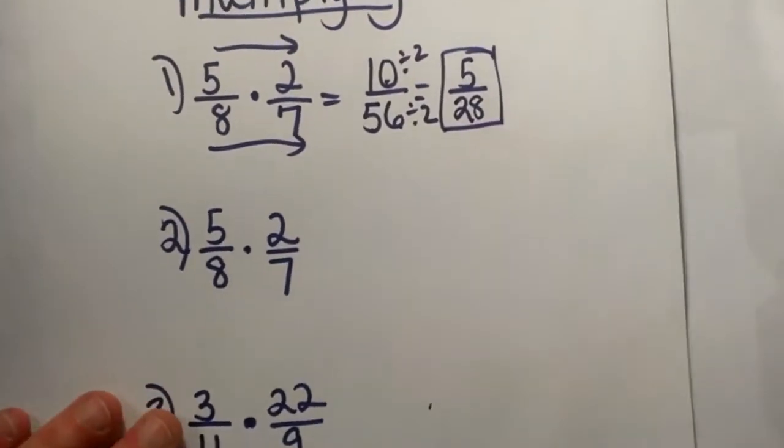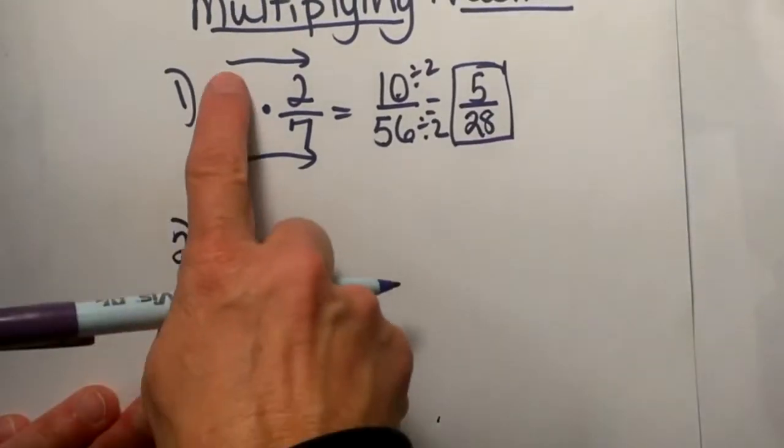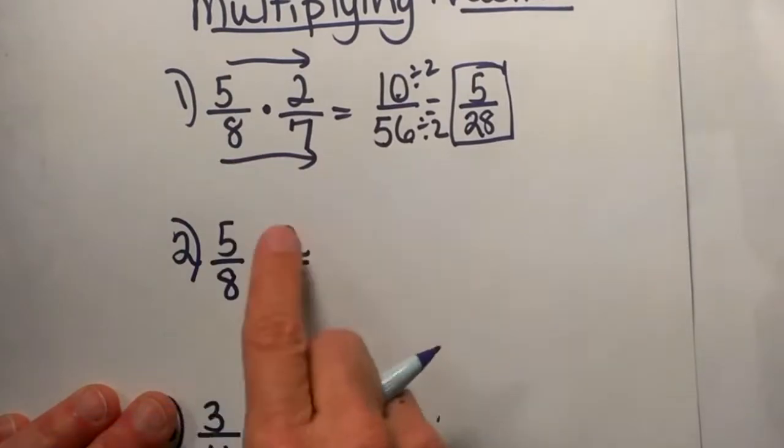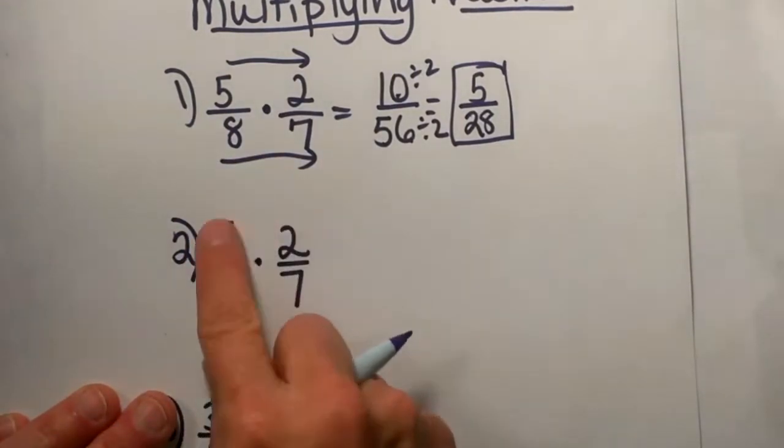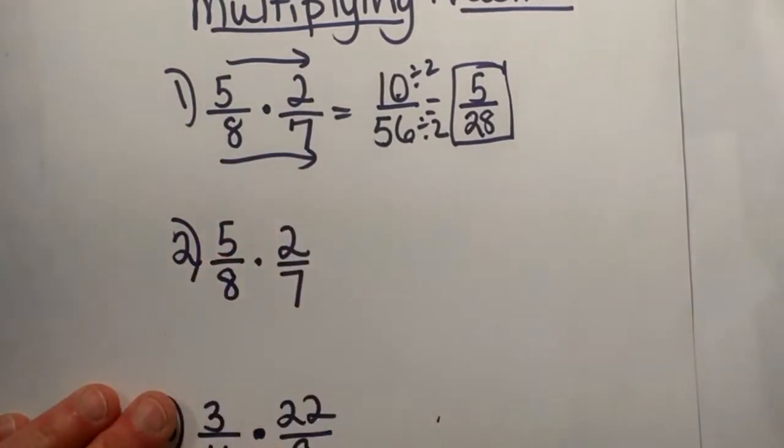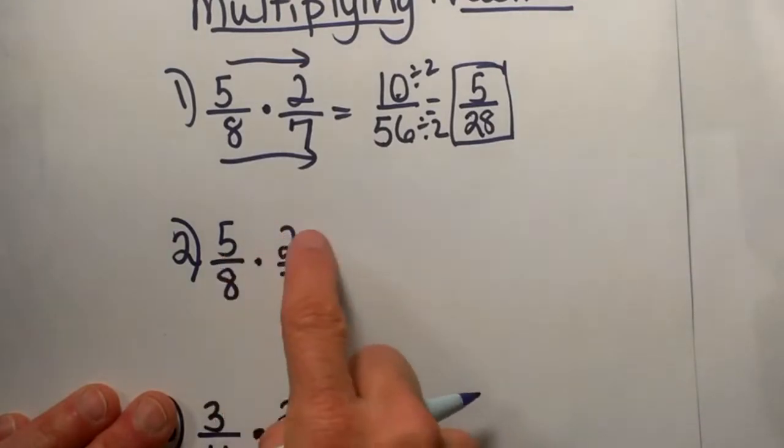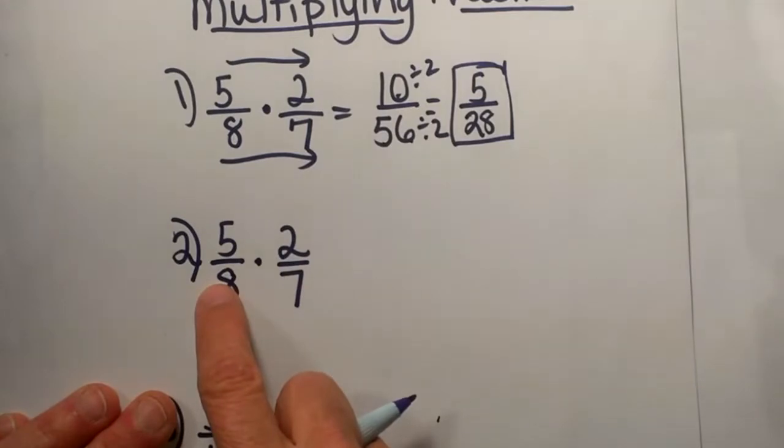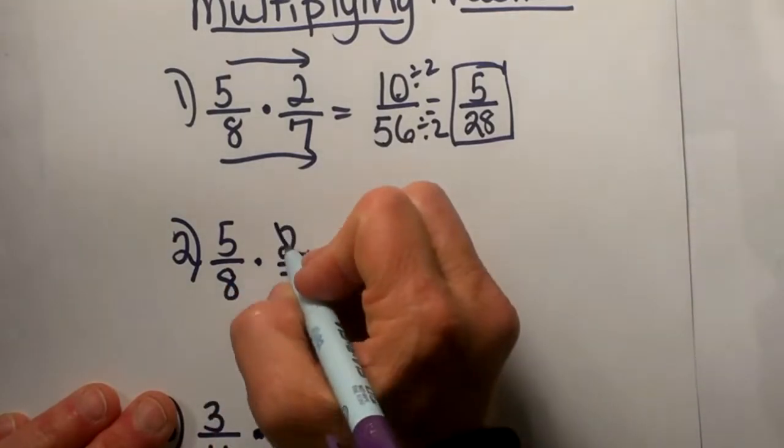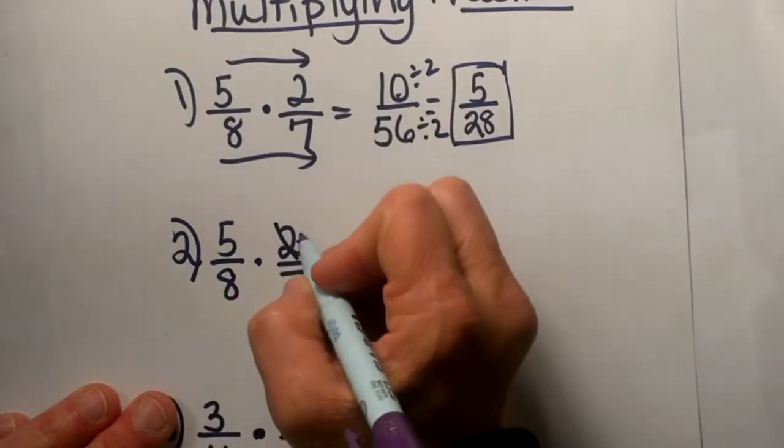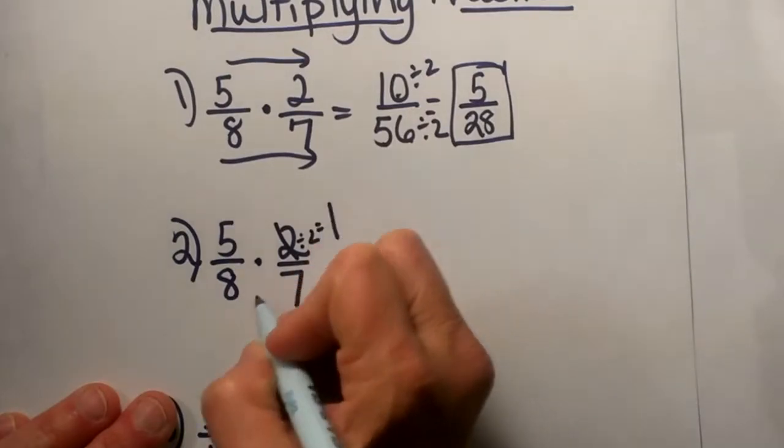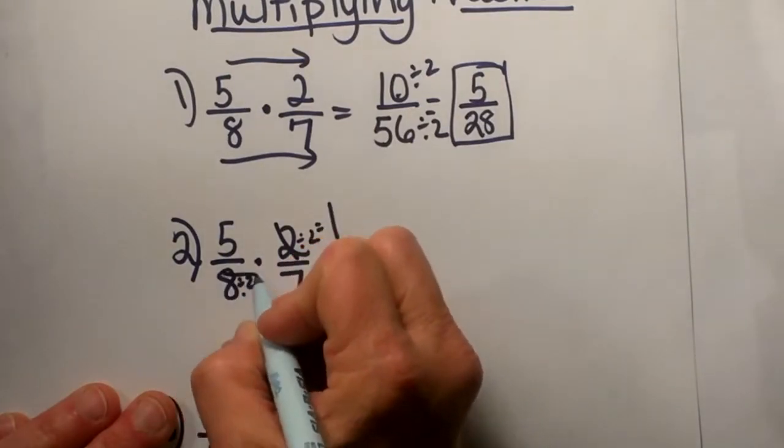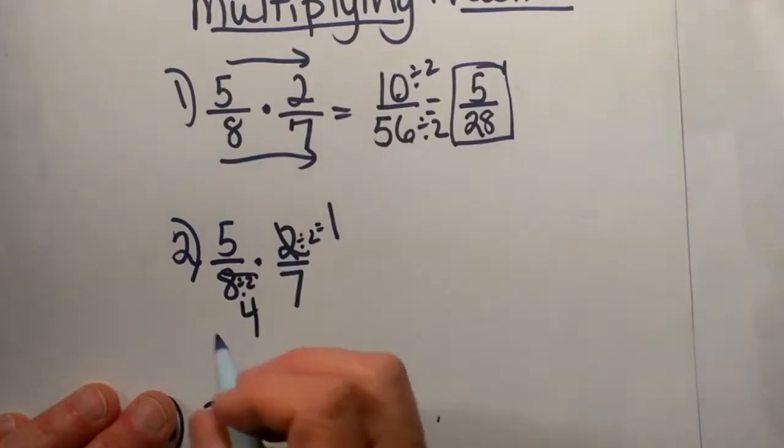Now let me show you a second method to do this one. Instead of going ahead and multiplying across, I can actually cancel and reduce this before I multiply. So what I'm going to do is look for common factors with any term in the top with any term in the bottom. Well, 5 and 8 can't reduce, and 2 and 7 can't reduce, but 2 and 8 can reduce. Both of them are divisible by 2, so I'm going to divide 2 by 2 and get 1, and divide 8 by 2 and get 4.